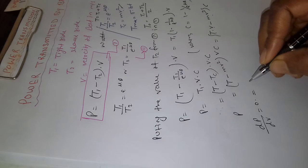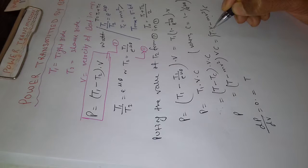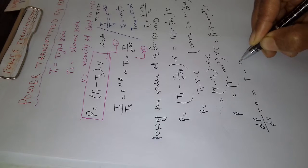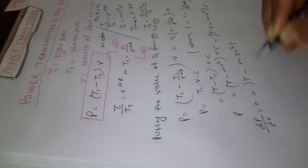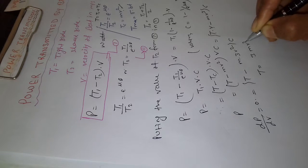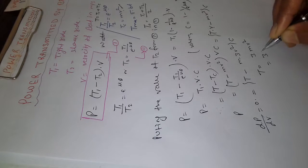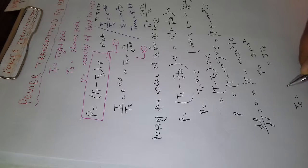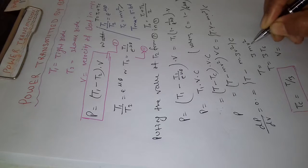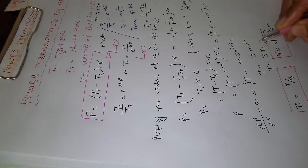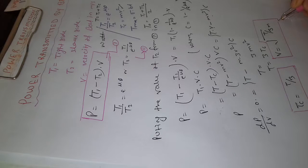Differentiating P with respect to V and setting it to zero: T − 3MV² = 0, so T = 3MV². This means MV² equals T/3, or Tc equals T/3. Therefore the velocity V at maximum power equals the square root of T divided by 3M: V = √(T/3M).